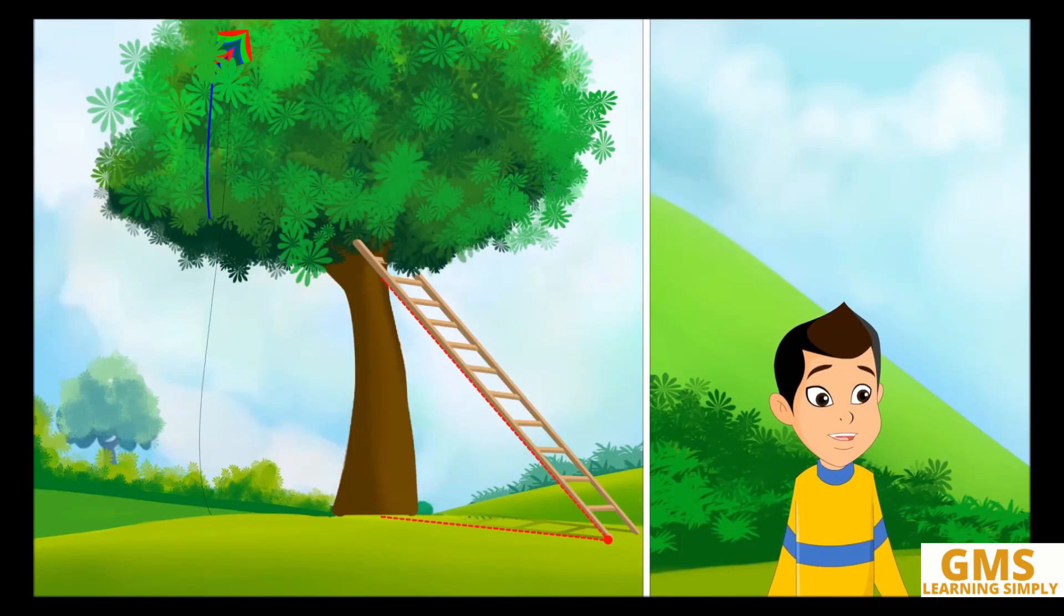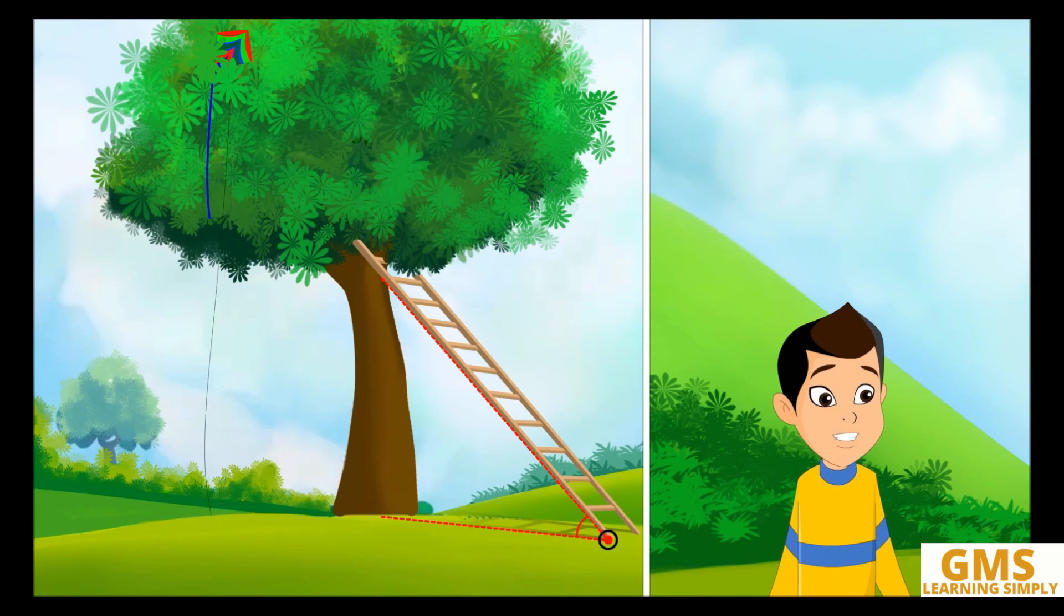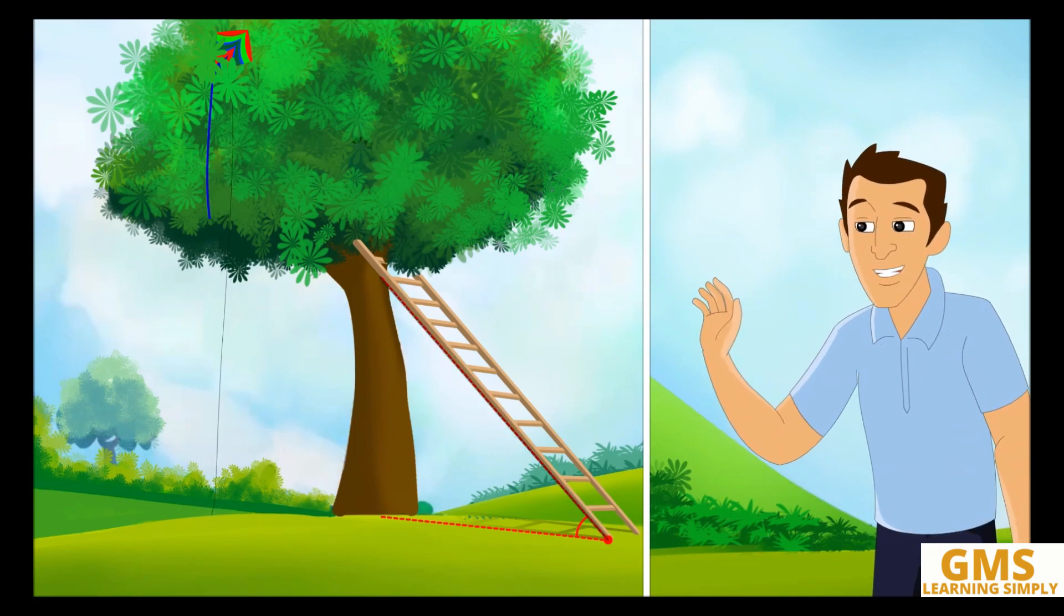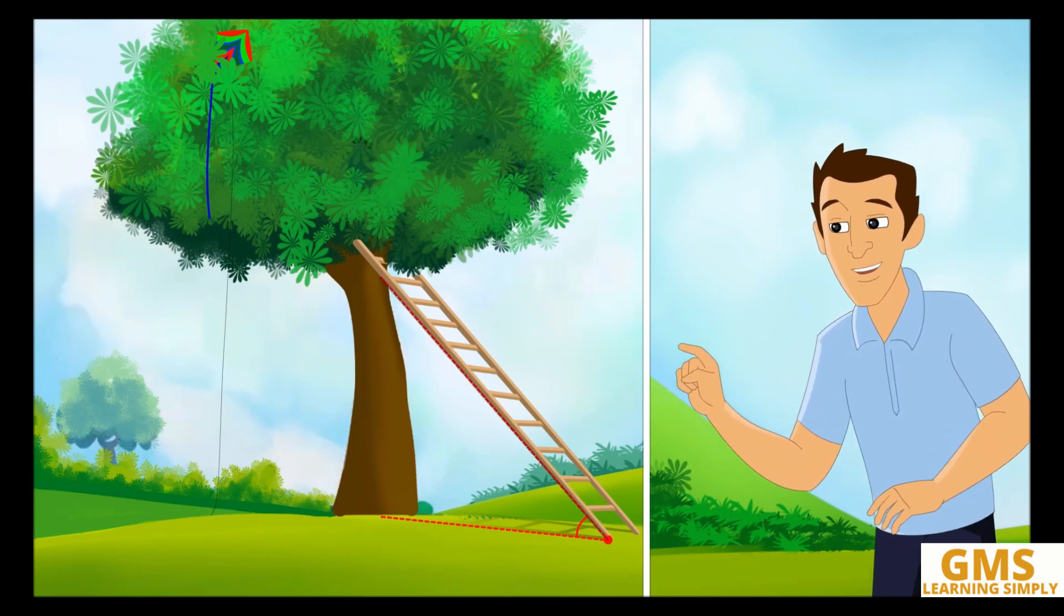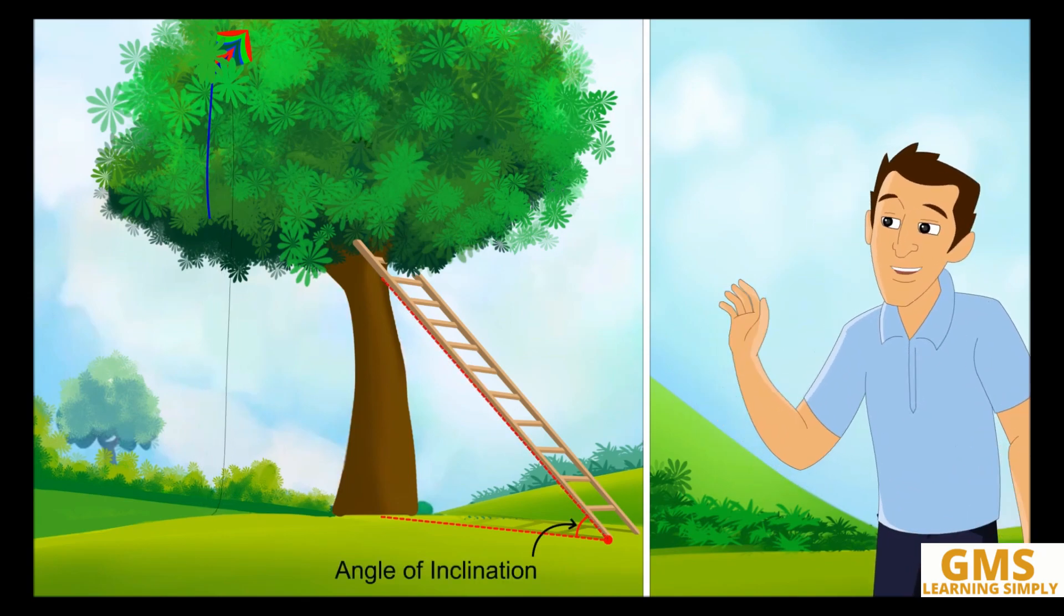Here the angle formed between the ladder and the ground is called the angle of elevation, and the point of contact with the ground is called the point of observation. Very good. As the ladder is inclined with the tree, it is also called an angle of inclination.